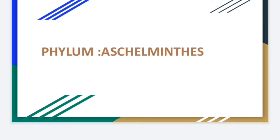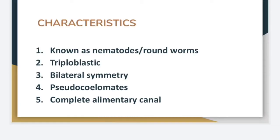Welcome back to the channel Info Science. Today we'll discuss phylum Nematoda. The animals in this group are known as nematodes or roundworms. They are triploblastic, meaning their body develops from three germ layers: the ectoderm, mesoderm, and endoderm. They also exhibit bilateral symmetry.